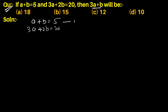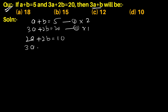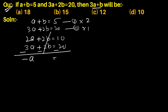Multiplying equation first by 2 gives 2a plus 2b equals 10. Subtracting from equation second: 3a plus 2b equals 20 minus 2a plus 2b equals 10, so minus a equals minus 10, therefore a equals 10.